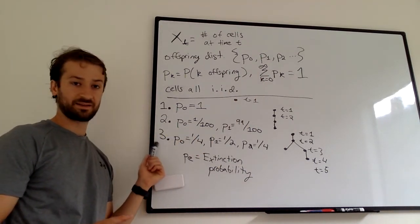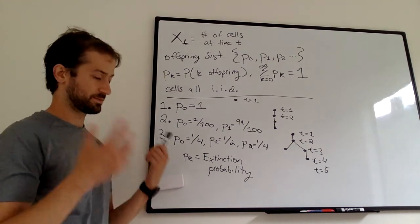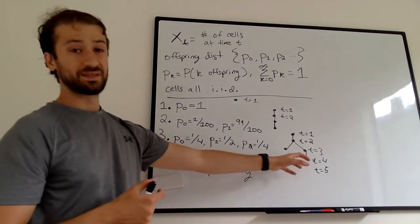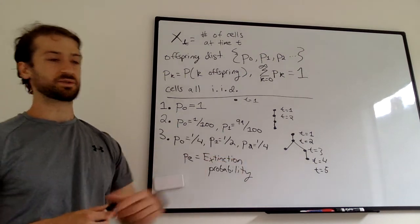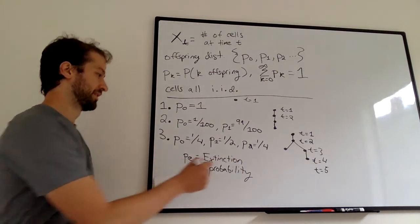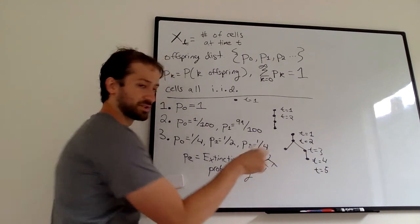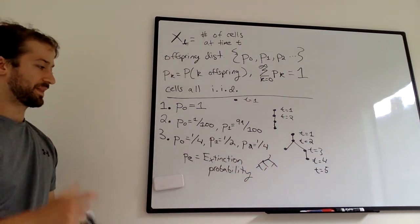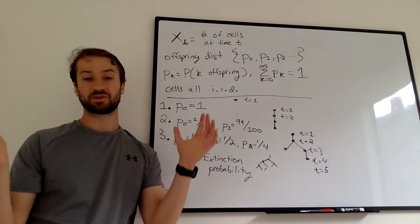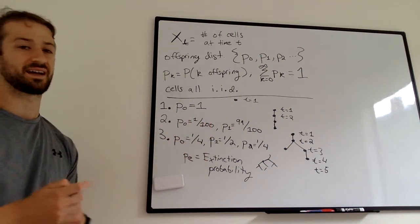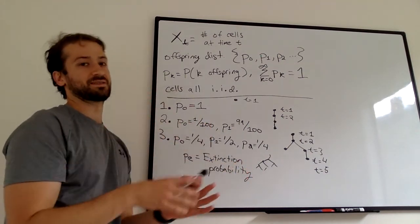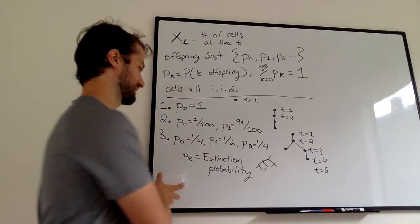This case, in branching process 3, we did go to 0 in the case we drew, but you can envision a case where we branch, and then we branch, and we branch, and we branch, and the thing just gets huge. And the population gets so big, and it's expanding so fast that it diverges as we go to infinity, and the process is not going to go to 0.